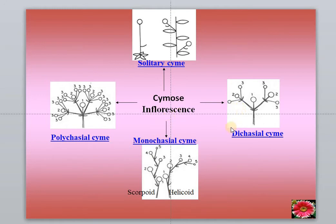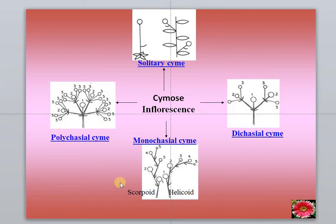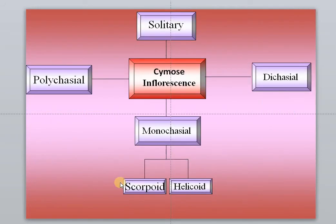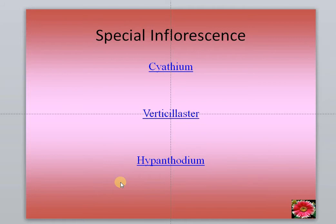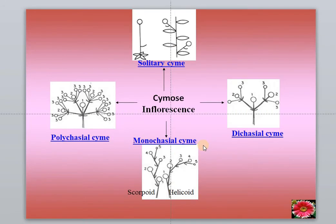Cymose inflorescence are of different types: one is solitary or simple cymose, then there is dichasial cyme, then there is monochasial cyme — scorpioid and helicoid — and polychasial cyme. There are also some special types of inflorescence called cyathium, verticillaster, and hypanthodium, which will be discussed later.